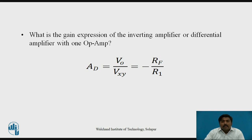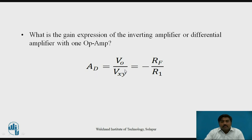The gain expression is: AD equals VO divided by Vxy, equals minus RF upon R1, where AD is the gain of the differential amplifier, VO is the output voltage, and Vxy is the differential input voltage. The same equation can be used for the inverting amplifier.